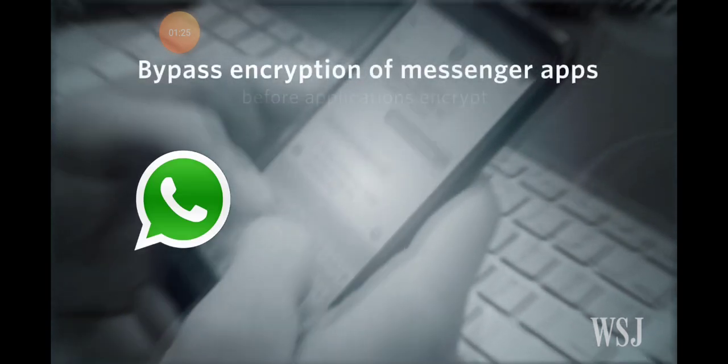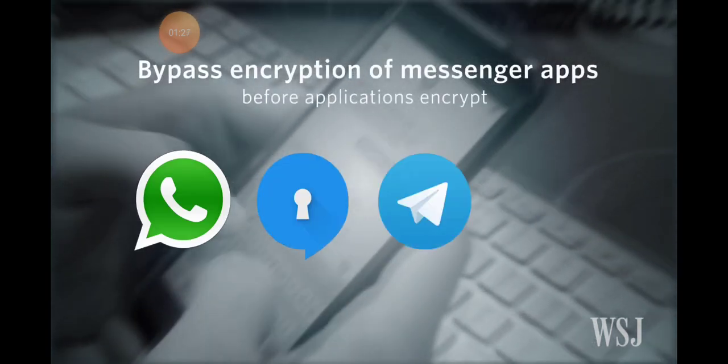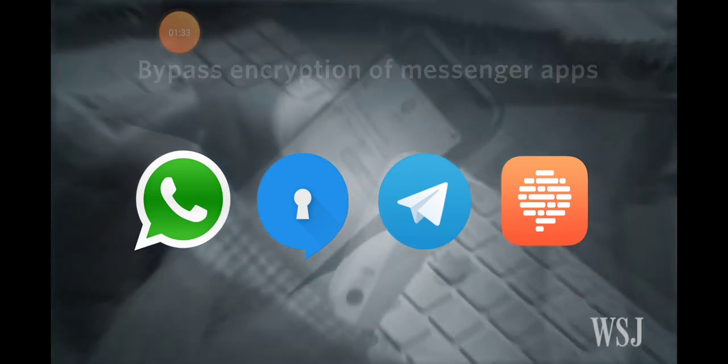If the CIA hacks John's phone, it can bypass the encryption of messenger apps, like WhatsApp, Signal, Telegram, and Confide that John uses, and collect voice, audio, and messages before the applications encrypt John's text.